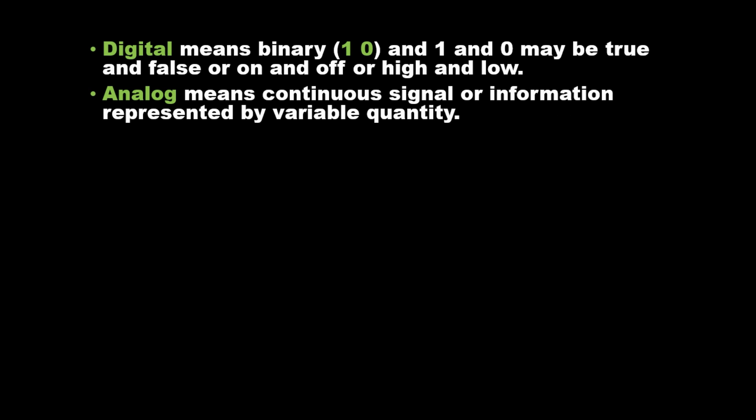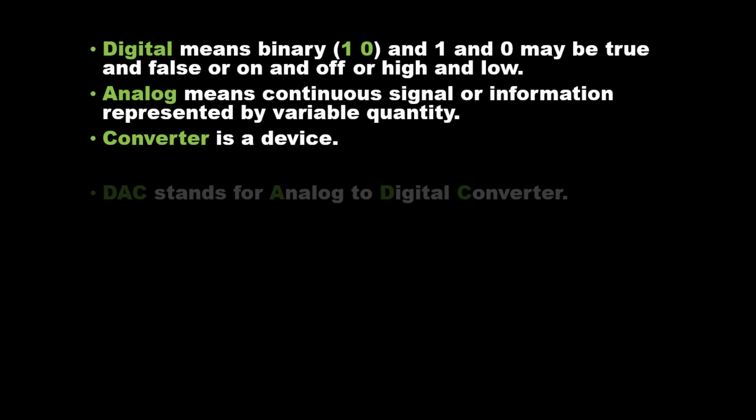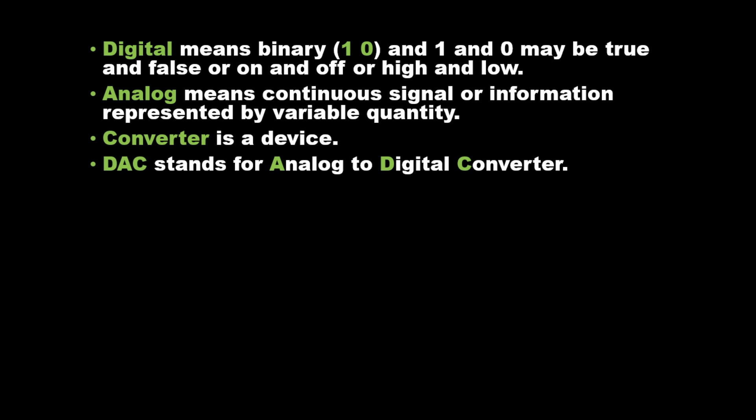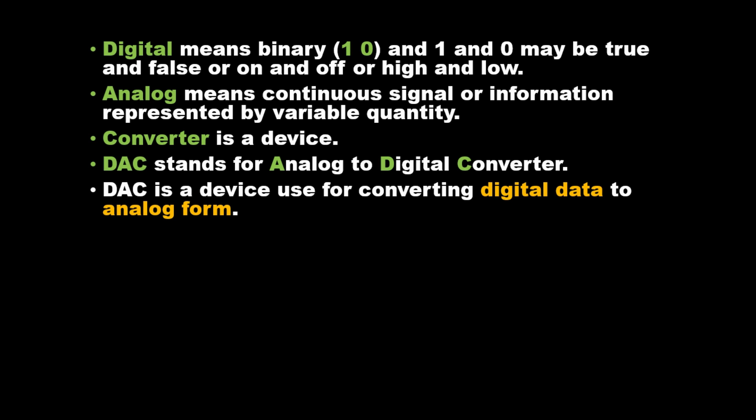Digital means binary — 1 and 0 — which may represent true and false, on and off, or high and low. Analog means a continuous signal or information represented by a variable quantity. A converter is a device. DAC is a device used for converting digital data to analog form.